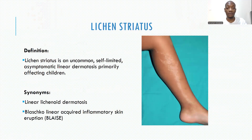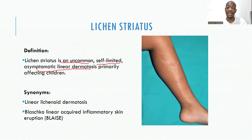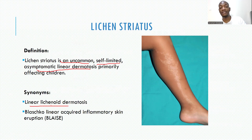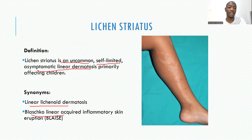Lichen striatus is one of the uncommon skin conditions which is self-limiting. Most of the time it is asymptomatic, and primarily affects children, though some cases have been reported in adults. It is also called linear lichenoid dermatosis because it has a clinical picture that looks like lichen — flat-topped papules and plaques. Since it follows a line, it gets the name 'linear.' It can also be called Blaschko Linear Acquired Inflammatory Skin Eruption, which we call BLAISE.